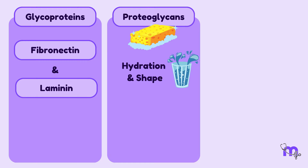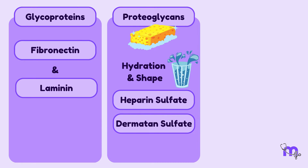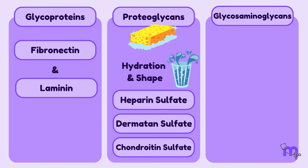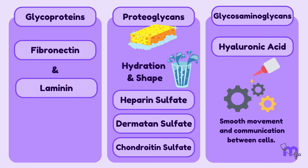The primary proteoglycans here are heparin sulfate, dermatan sulfate, and chondroitin sulfate. Lastly, we have the glycosaminoglycans, with hyaluronic acid being the primary one. These act like lubricants, ensuring smooth movement and communication between cells.